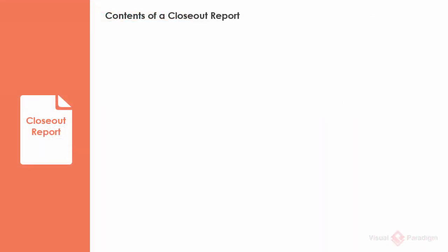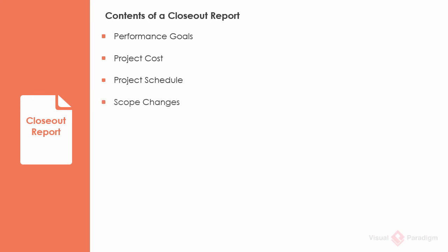Let's take a look at the contents of a typical closeout report. Performance goals: describe how the project performed against each performance goal established in the project performance plan. Project cost: state the planned and actual cost of the project, documenting variances and explaining why they exist. Schedule: document the initial approved schedule baseline against the actual completion dates, describing schedule variances with explanation. Scope changes: document any changes to the project scope and the impact on performance, cost, or schedule baselines. Project resources: identify to whom each project resource was transferred and when, and account for all project resources utilized.